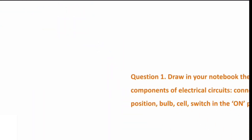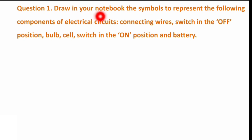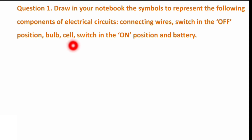Question number 1 is: draw in your notebook the symbols to represent the following components of electrical circuits — connecting wires, switch in the off position, bulb, cell, switch in the on position, and battery. We have already discussed the symbols of electric circuits. It is easier to draw a circuit with the help of symbols. So instead of physical components, we use symbols. Here some component names are given and we need to draw their symbols.